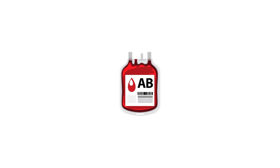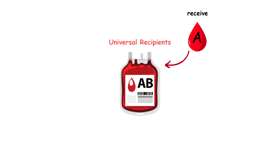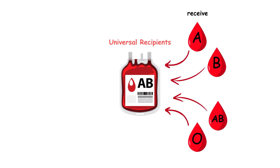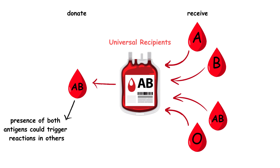Individuals with type AB blood are universal recipients in the ABO blood group system, as they can accept A, B, AB, and O blood without the risk of an antibody-mediated reaction. However, they can only donate blood to other AB individuals, as the presence of both antigens could trigger reactions in others. This blood type is the least common but highly valuable for its broad compatibility for receiving transfusions.